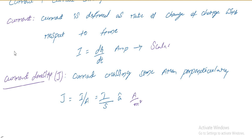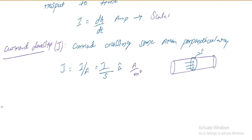Let us consider a conductor. Let us consider some surface area S. This is a current which is passing or crossing this area normal to this surface. The direction of momentum of electrons or charge is indicated with unit vector A, which is normal to this surface. So A is a unit vector which is perpendicular to the area.